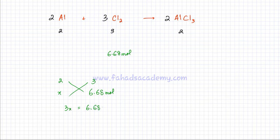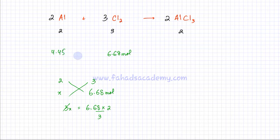I can take the 3 from there and divide: it's 6.68 × 2 ÷ 3. Using the calculator, the answer is 4.45 moles. So 4.45 moles of aluminium would be needed to react with 6.68 moles of chlorine.